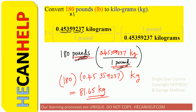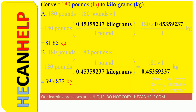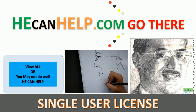So 180 pounds is the same as 180 pounds times 1, and 1 is the same as 1 pound divided by 1 pound. Because we want to get rid of the pounds, we put the pound at the bottom and replace the pound at the top with whatever is equivalent to 1 pound — 0.45359237 kilograms. We multiply 180 by 0.45359237 and get 81.65 kg. So the answer is A. This is George Matthew wishing you all the best, good luck.